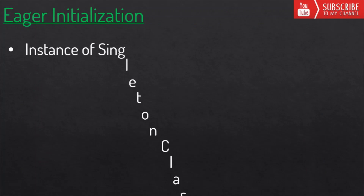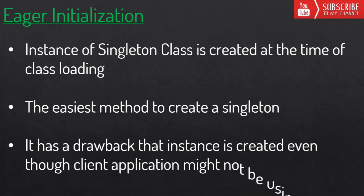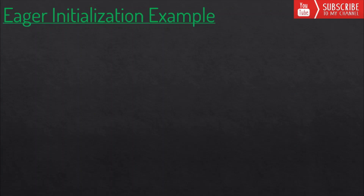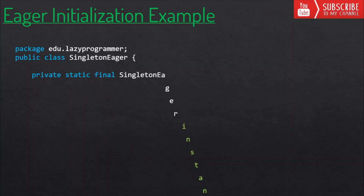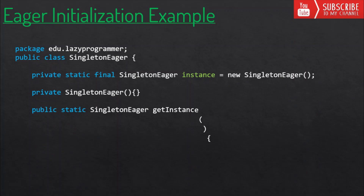In eager initialization, the instance of the singleton class is created at the time of class loading itself. This is the easiest method but has a few drawbacks — the instance is created even though the client application might not be requiring it at that time. Here we have the class SingletonEager. It has one static variable of the same type, initialized to new SingletonEager. It has a private constructor so other classes cannot instantiate it, and a static method as the global access point to get the instance.